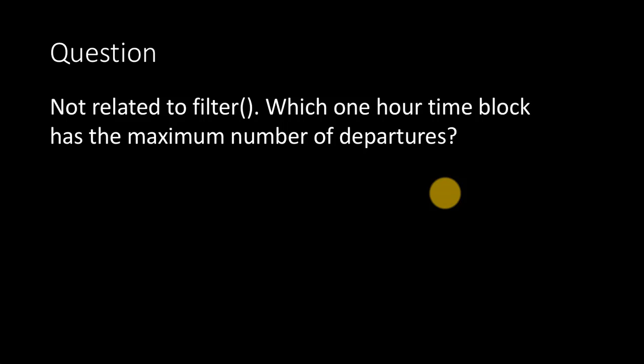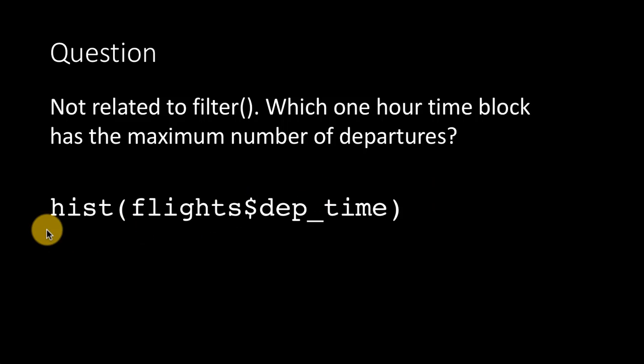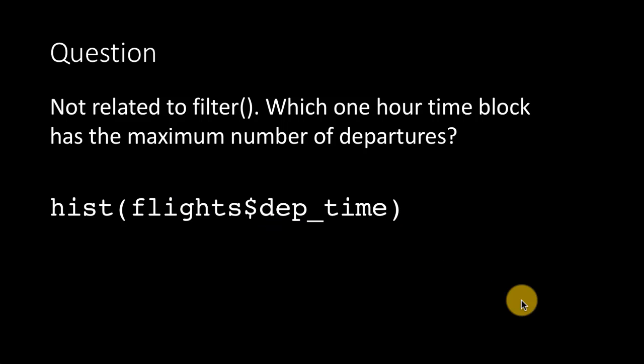An interesting question unrelated to filter: which one-hour time block has the maximum number of departures? The easiest way is to plot a histogram using hist(flights$dep_time) with base R graphics. From this histogram, you can clearly see that 8 a.m. to 9 a.m. is the time block with the maximum number of flight departures.